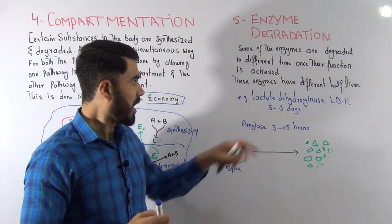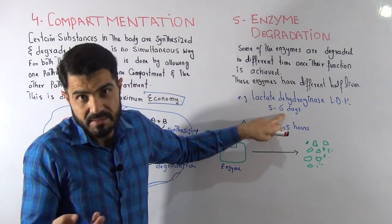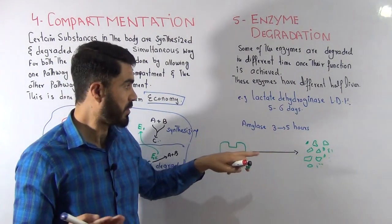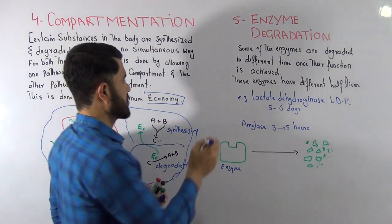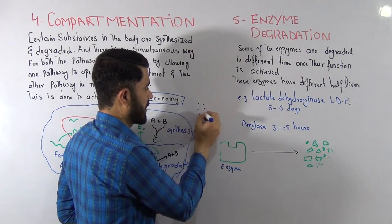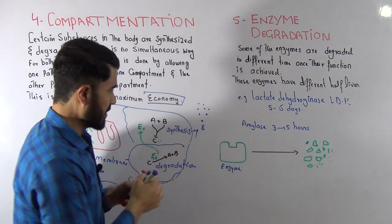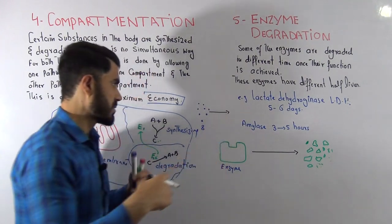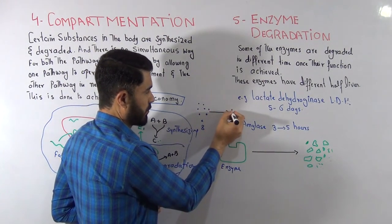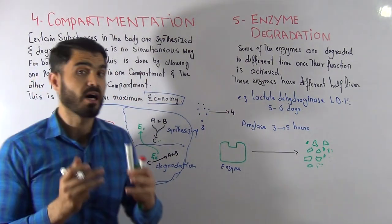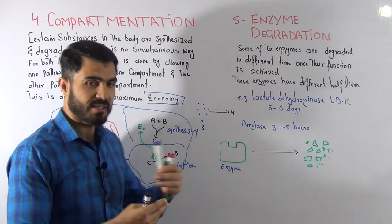Different enzymes are broken down at different rates. Some enzymes are broken down to half their concentration in five to six days, while others reach half their concentration in just three to five hours. For example, if you have eight enzymes and we want to know how long it takes to degrade four of them, that time is called the half-life. Every enzyme that is degraded in our body has its own half-life.